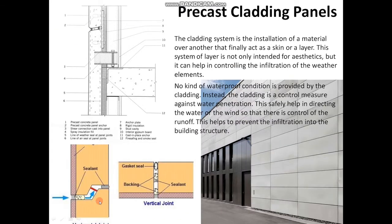The next important type is precast cladding panels. The cladding system is the installation of a material over another, which finally acts as a skin or layer. This system is not only intended for aesthetics but can help in controlling the infiltration of weather elements. Cladding does not provide waterproofing; instead, it is a control measure against water penetration, helping to direct water and wind to control runoff and prevent infiltration into the building structure. The picture shows precast cladding panels and their cross-section with details and components.